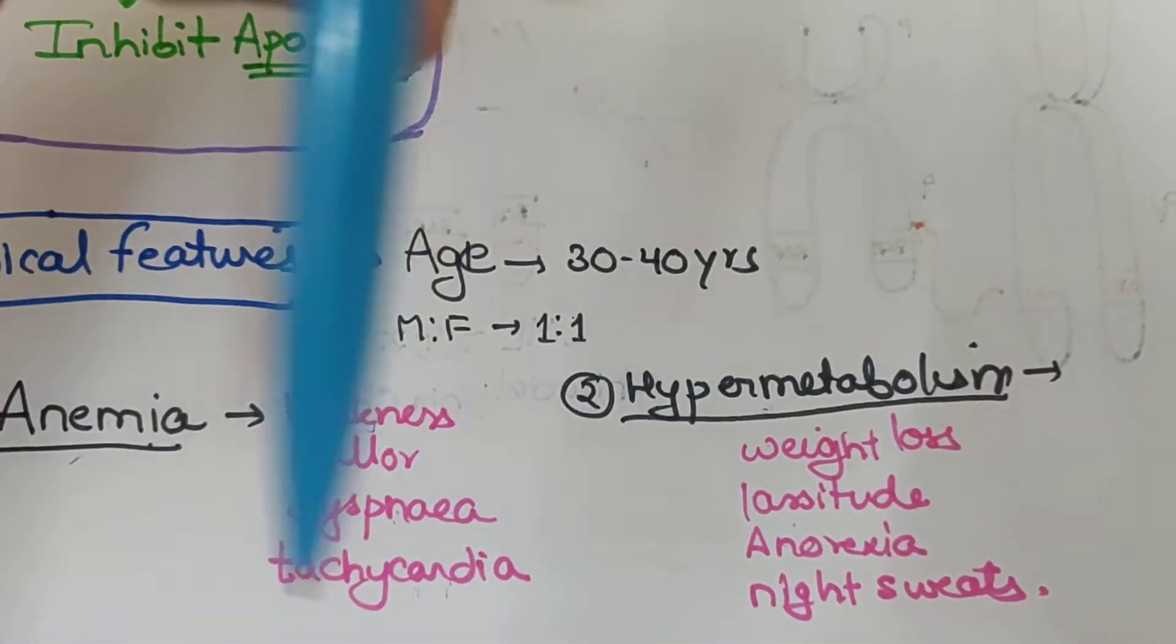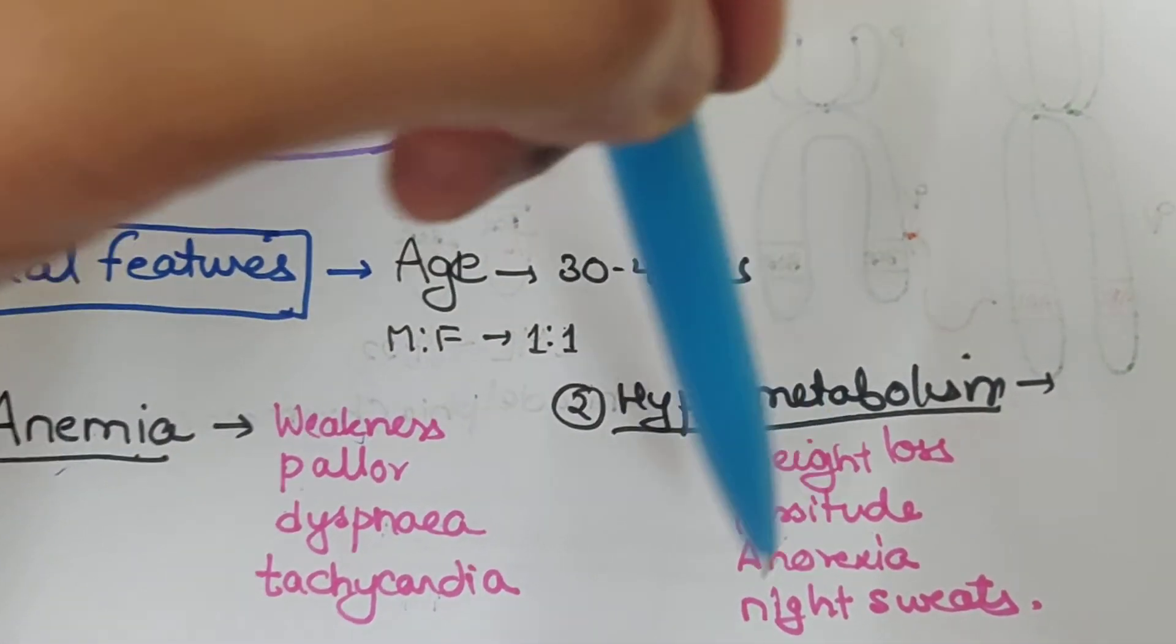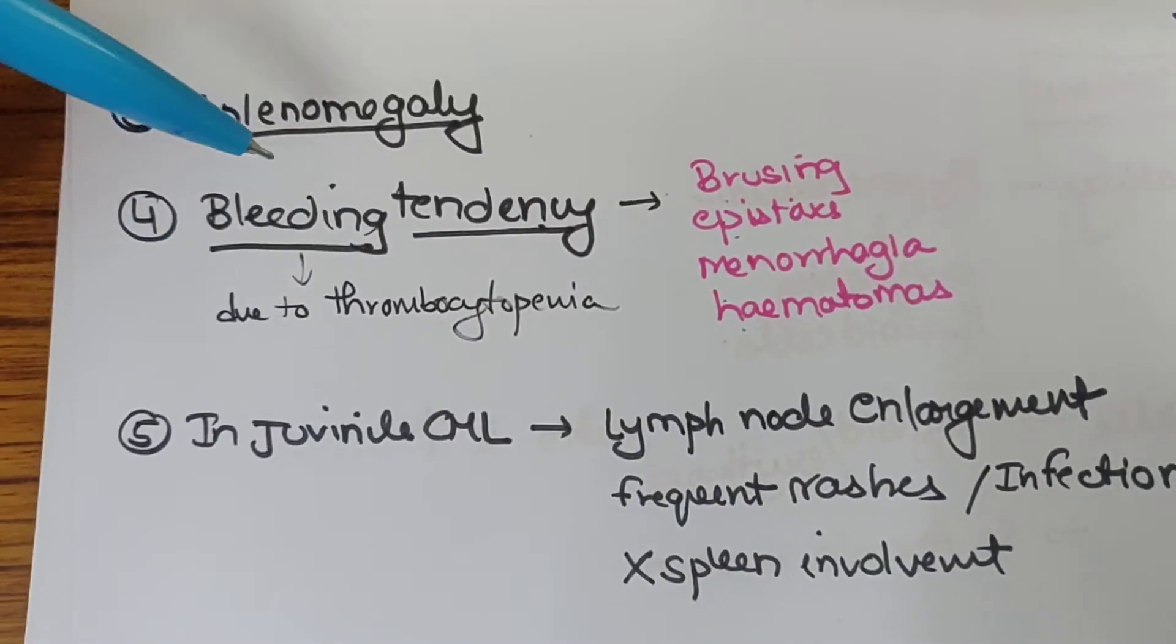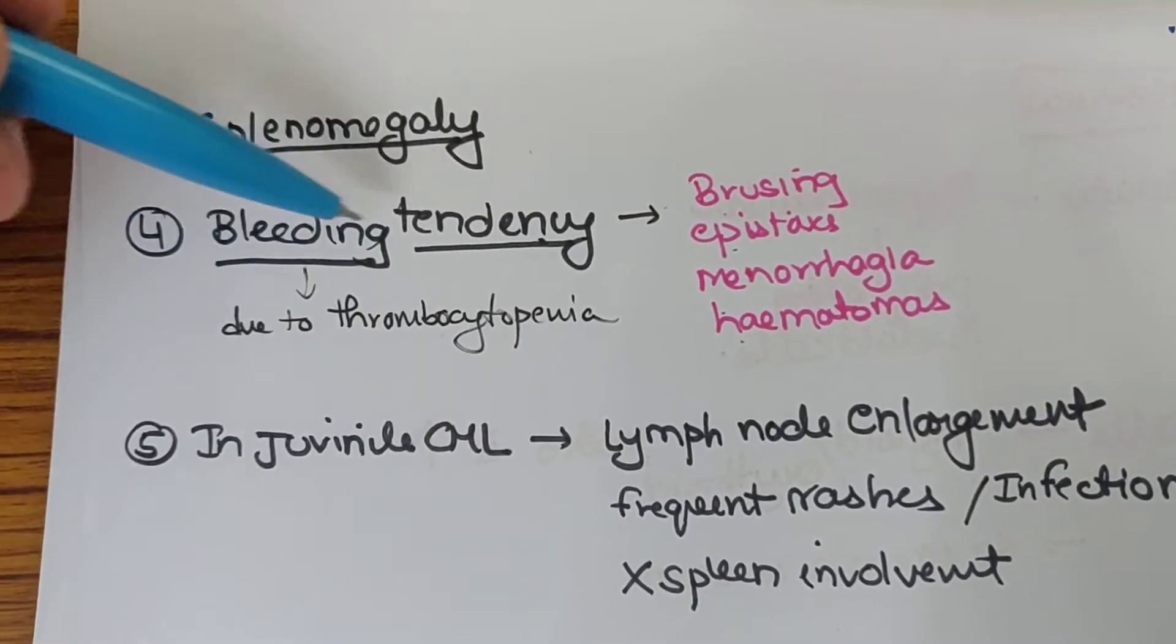We can see hypermetabolism with weight loss, lassitude, anorexia and night sweats. Also splenomegaly and bleeding tendency are observed.